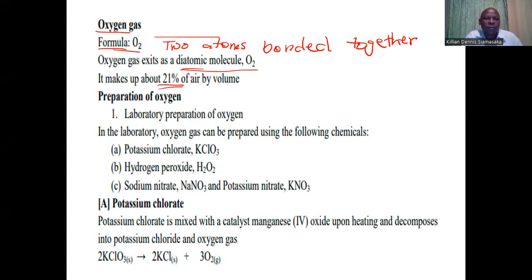The percentage of oxygen in air is approximately 21 percent. That's the abundance we find in the air.